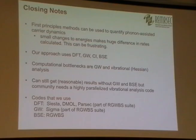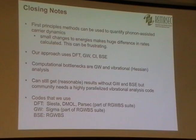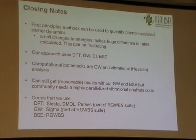We can get qualitatively reasonable results doing DFT calculations without GW and BSE, just looking at trends, but we need a highly parallelized code that doesn't yet exist for vibrational analyses. The codes we use: for density functional theory, we use Siesta a lot — it's public domain, so if you ever do DFT, don't buy codes, they're free. We also use Dmol, which costs about $10,000 per year to license but it's excellent. Then there's Parsec, which is Jim Tchalkowski's code, part of the RGWBS suite at UT Austin. Sigma is the GW code we use, also part of that RGWBS suite from Tchalkowski's group, and the same suite provides the BSE code.